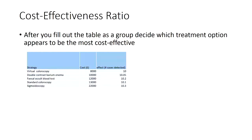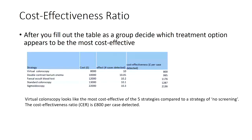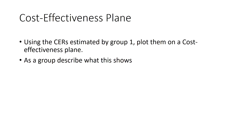The cost-effectiveness ratio group is given costs and effects and needs to calculate what the cost-effectiveness ratio is — it's very simple maths. They fill this out on Blackboard. From this, virtual colonoscopy appears to be the most cost-effective option just looking at the simple numbers across the five groups.